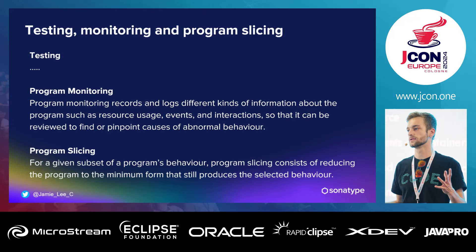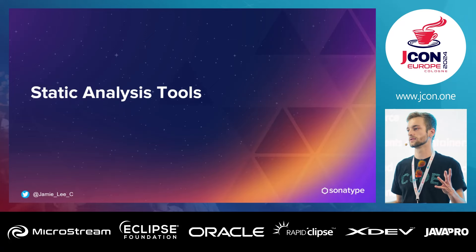Some dynamic analysis terms: program monitoring records and logs different kinds of information about your program — resources, usage, events, interactions — which can be reviewed to pinpoint abnormal behavior. Program slicing is essentially cutting down your application to the minimum possible to achieve the function you're trying to analyze, removing all the peripheral parts that aren't relevant to what you're testing.